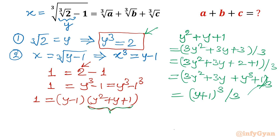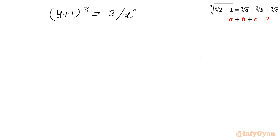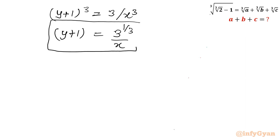Now, y minus 1 equals x cubed, so putting both values in the equation: 1 equals x cubed times (y plus 1)³ over 3. Multiplying both sides by 3: 3 over x cubed equals (y plus 1)³. Taking cube roots of both sides: y plus 1 equals 3^(1/3) divided by x. This is a very important result.